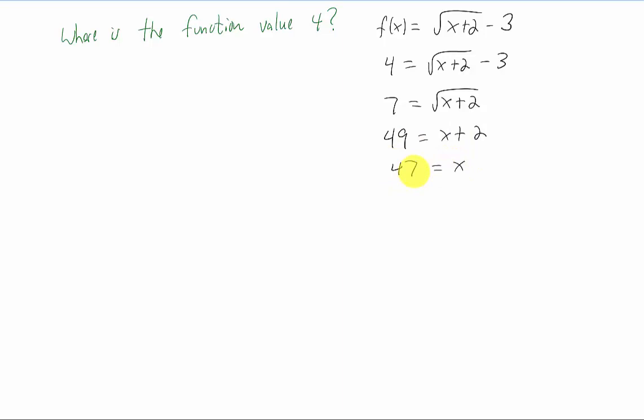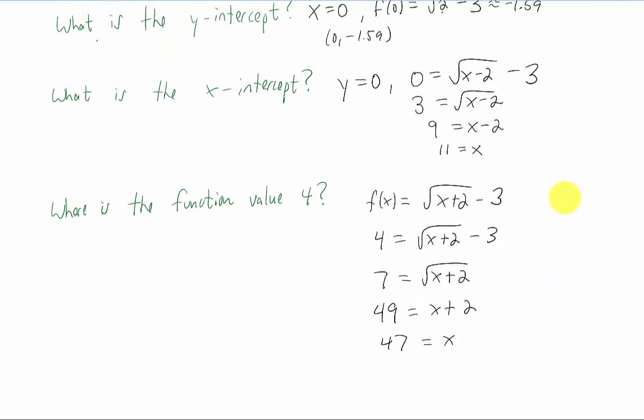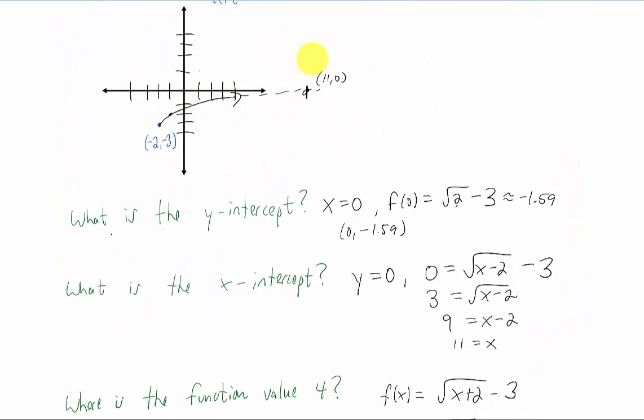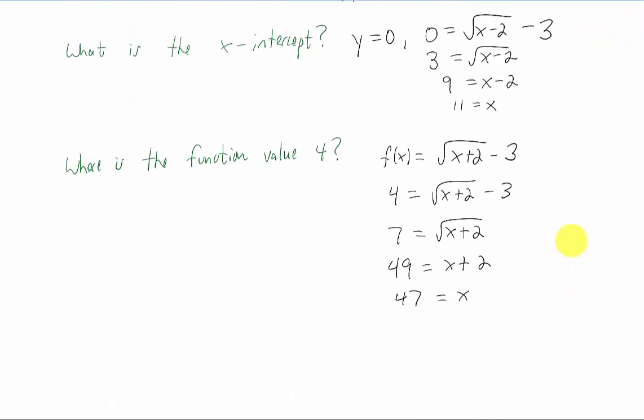That means on our graph of this square root function doesn't reach the y value of 4 until it reaches an x value of 47. So it's way over here somewhere. Okay, I guess that's all I have for you in this video. We'll do more in class. And I will see you there.